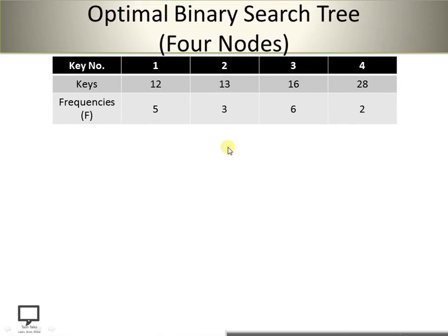Now let's start with the example. I have used 4 keys: key numbers 1, 2, 3, and 4, which correspond to keys 12, 13, 16, and 28 respectively. Their frequencies are 5, 3, 6, and 2 respectively. All keys must be in increasing order in the frequency table. The frequency is the number of times a particular key is searched.